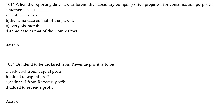When the reporting dates are different, the subsidiary company often prepares a sub-consolidated perforce statement as at: Option A — 31st December; Option B — same date as that of the parent; Option C — every 6 months; Option D — same date as that of the competitor. The correct answer is Option B — the same date as that of the parent. The consolidated statement is prepared by the subsidiary company as at the same date as that of the parent company.